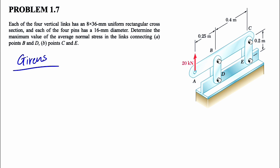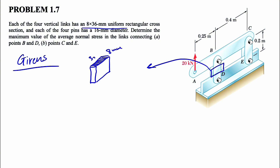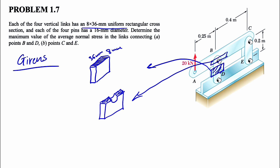From the first line, we know the cross section is 8 by 36 millimeters. Consider this link — the cross section in the middle is 8 mm by 36 mm. It will be a bit different at the cross section where the pin exists. At the pin location, we have a different cross section — the material has a hole through it where the pin passes, so that cross section shows the remaining area around the pin hole.